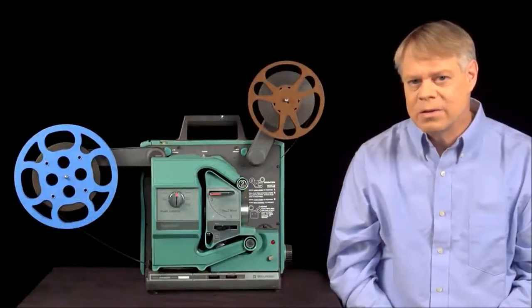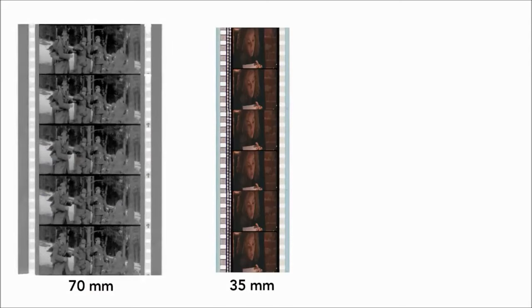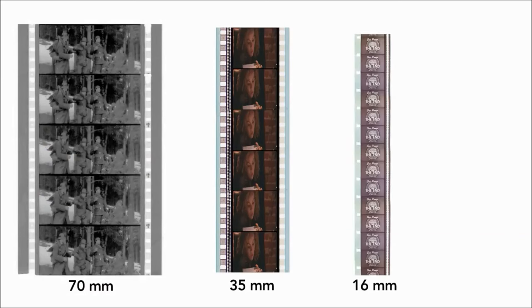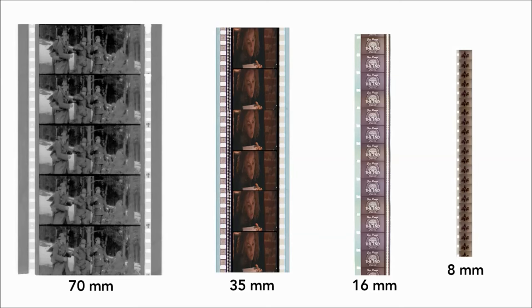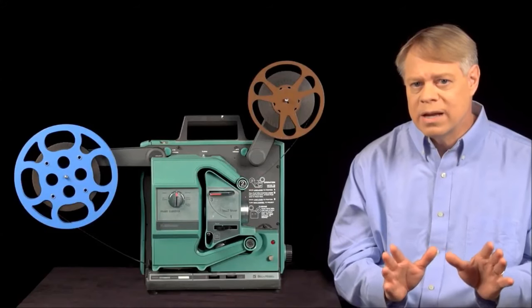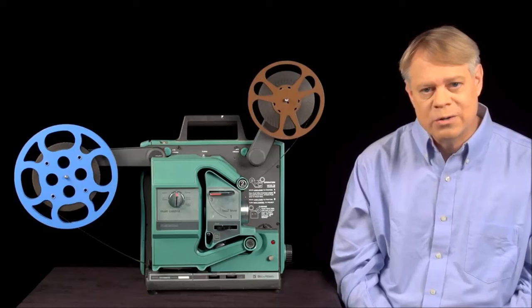Film came at many sizes, from the giant 70mm popular in the 1960s for epics like Lawrence of Arabia, to 35mm used for most feature films, to 16mm for schools, and even 8mm used by home enthusiasts. The larger the film, the greater the resolution. All worked with mechanisms similar to common 16mm projectors.